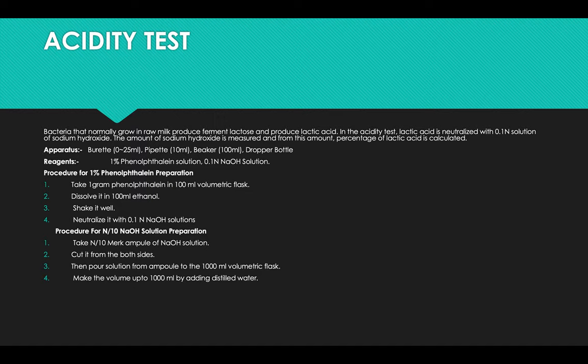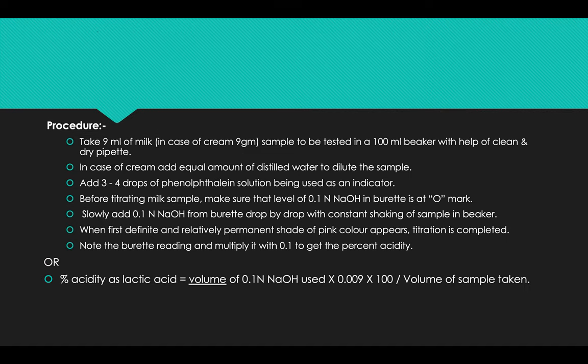For preparation of 1 percent phenolphthalein, take 1 gram of phenolphthalein in 100 ml volumetric flask, dissolve it in 100 ml ethanol, shake it well and utilize it with 0.1 normal sodium hydroxide solution. For 0.1 normal sodium hydroxide solution, take standard ampoules of 0.1 normal concentration, cut it from both sides, and pour that solution from the ampoule into 1000 ml volumetric flask, then make the volume up to 1000 ml by adding distilled water.